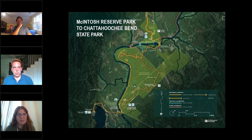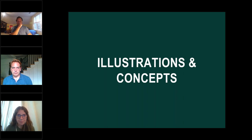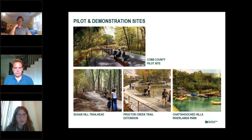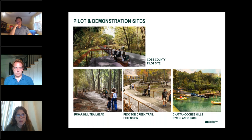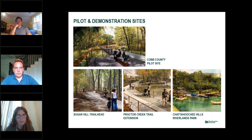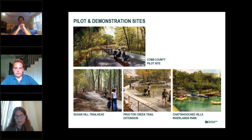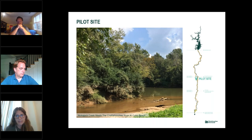Hard to describe 100 miles in a short period of time, and I definitely left a lot out, but we're happy to return to any of those images to speak further on the project. While the majority of the project was focused on overall alignment studies for the big 100-mile vision, we also wanted to zoom in and look at a couple of different places. We looked at a pilot site in Cobb County to test different material expressions of the trail and understand how the trail could be permitted through the MERPA review process. And then we look at three demonstration sites: the Sugar Hill Trailhead, the Proctor Creek Trail Extension, and the Chattahoochee Hills Riverlands Park — three potentially catalytic projects that embody different principles and goals of the project.